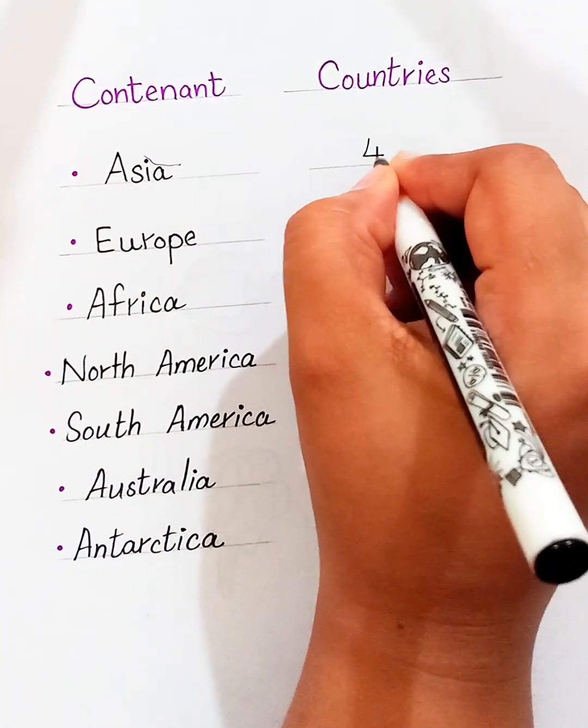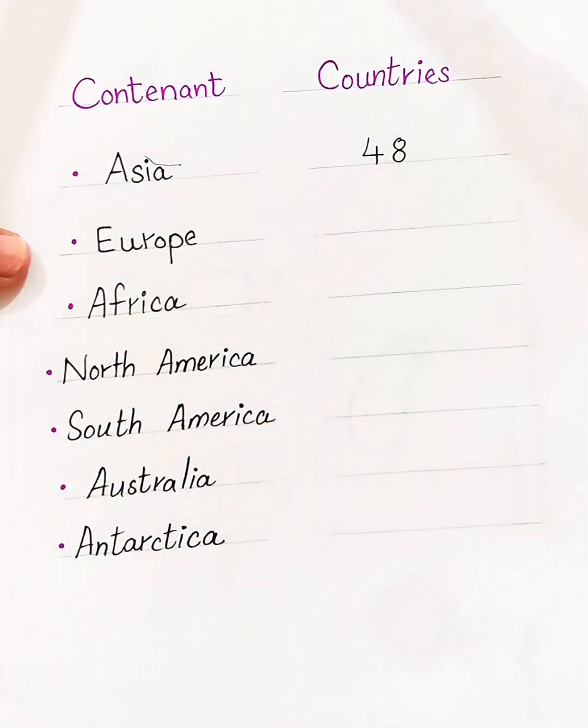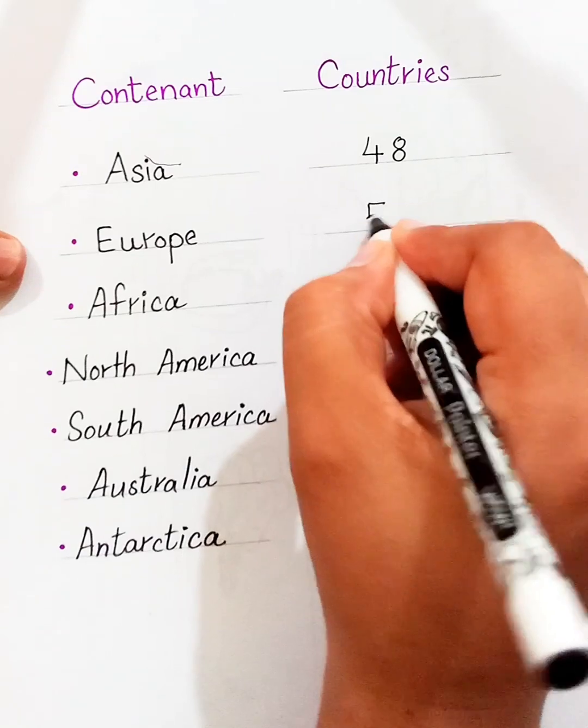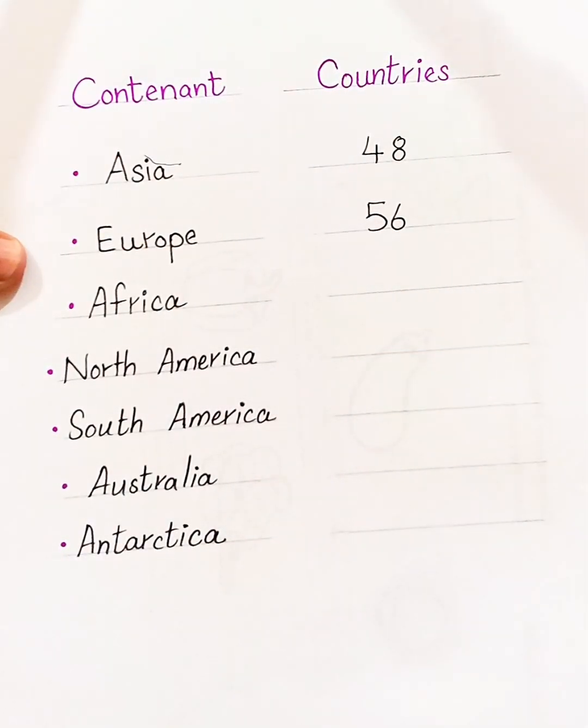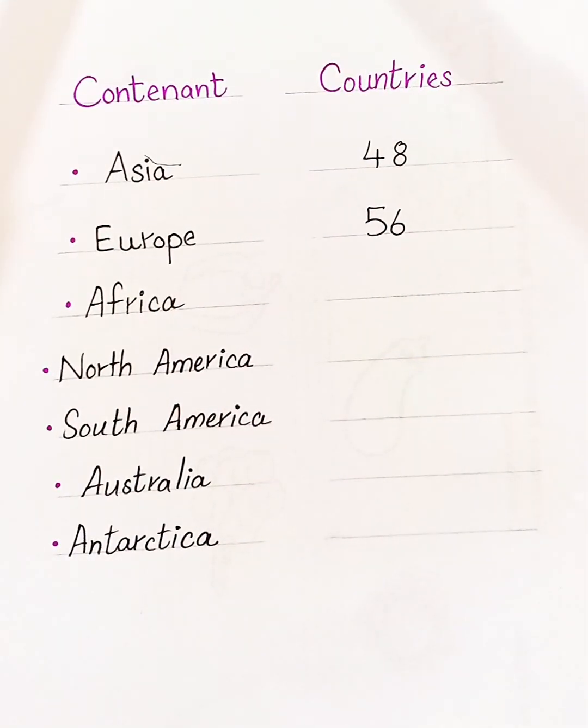Continents and their countries. Asia has 48 countries. Europe has 56 countries. Africa has 54 countries.